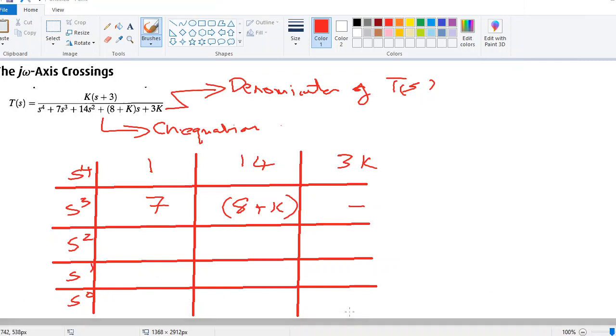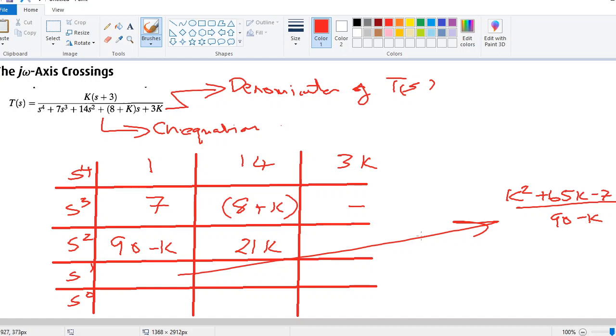From the textbook, you can see that upon calculations, they are able to figure it out in this manner. They get it as 90 minus k, and over here you get 21k. And in this section, you will get it as k squared plus 65k minus 720 divided by 90 minus k, and then there is nothing on these two blocks. The last block you get as 21k.